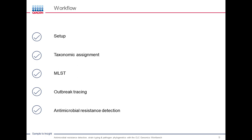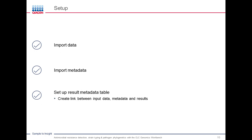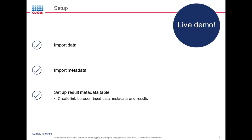I'll now demonstrate how to use our tools to analyze whole genome sequencing data using the Salmonella case. The overall steps I will go through are: assigning taxonomy to the isolates, finding the multi-locus sequence types, investigating the phylogenetic relationships of the isolates, and looking for antimicrobial resistance genes. Before we can get started, we first need to do a bit of setup: import our sequencing data, import any metadata we have available, and then set up a result metadata table — essentially a table that links the raw read data, metadata, and all result files we generate. I will now switch to a live demo.